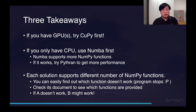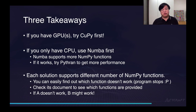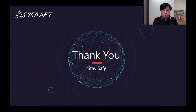If one solution doesn't work, another might. For example, if Pythran doesn't work, you can always give Numba a try. In reality, especially during my work, I always try to use a mixture of these three proposed methods — sometimes Numba with Pythran, or CuPy with Pythran. I suggest you give a mixed solution a try. That's pretty much all my talk — thank you.